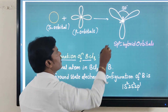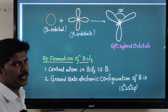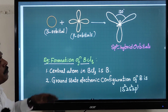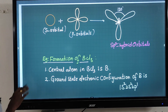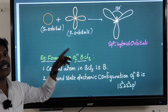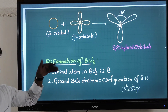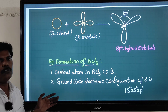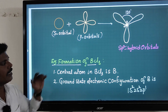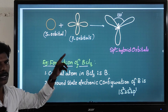The bond angle between adjacent sp2 hybrid orbitals is 120 degrees. Let me explain sp2 hybridization with the best example: boron trichloride (BCl₃). In the previous video, beryllium dichloride was the example for sp hybridization. Here, boron trichloride is the example. The central atom in BCl₃ is boron.